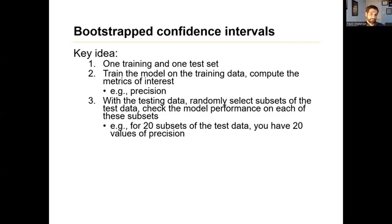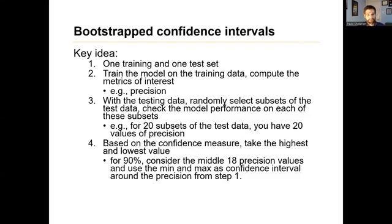But this is being used essentially to give you some kind of notion of an error bar on the precision or whatever other metric you were looking at that was obtained in step two. So in step four, based on a confidence measure, let's say you want to do 90% confidence interval, taking the middle 18 precision values out of the 20 you took from the last step, and just taking the highest and lowest and using that as an interval around the original metric from step two.